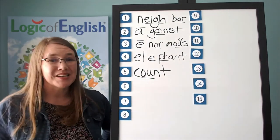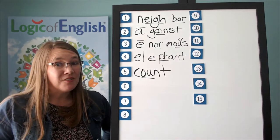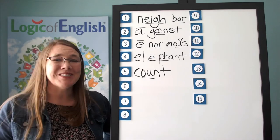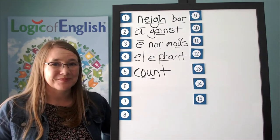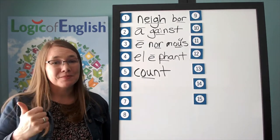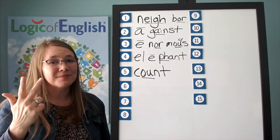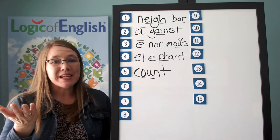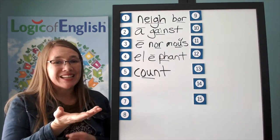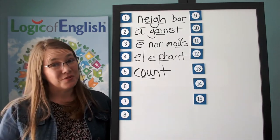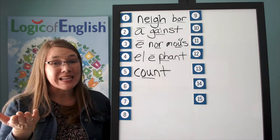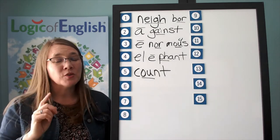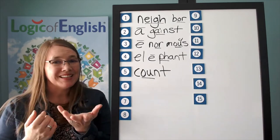The next word is speedometer. How fast does the speedometer say you are driving? Speedometer. Go ahead and say speedometer. How many syllables? Four. We will say to spell speedometer. What will we say to spell? Speedometer.